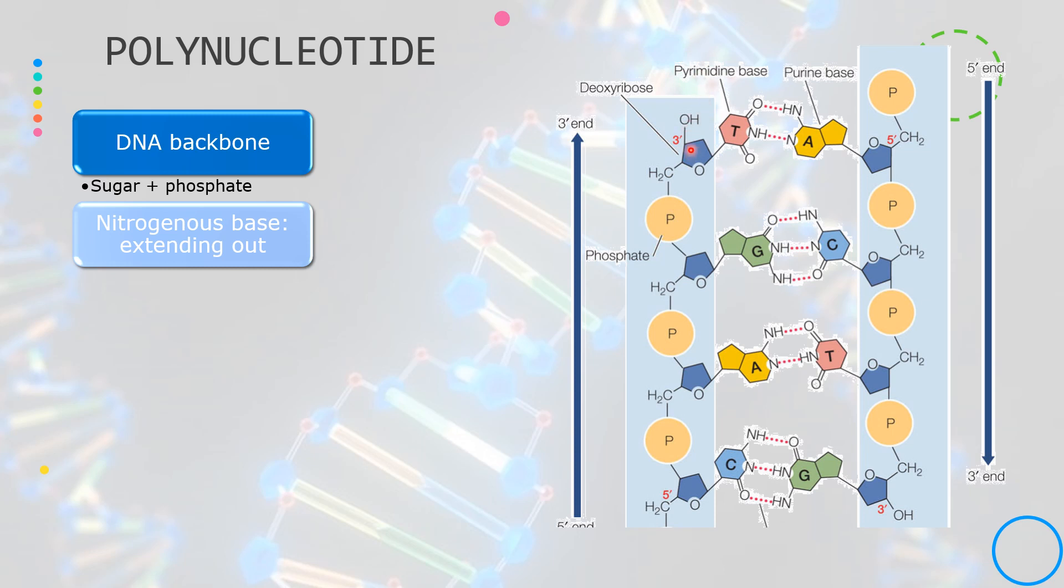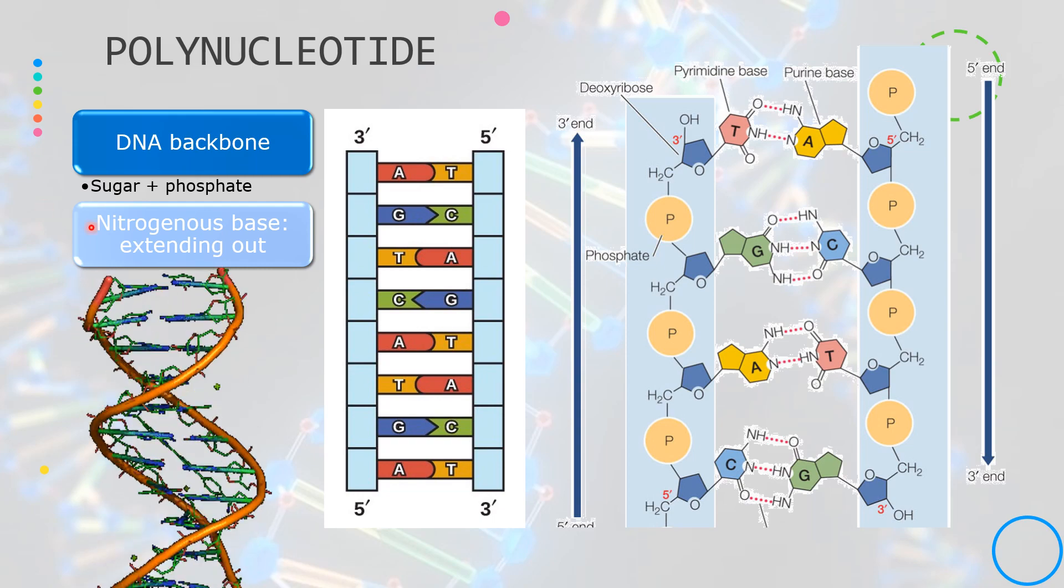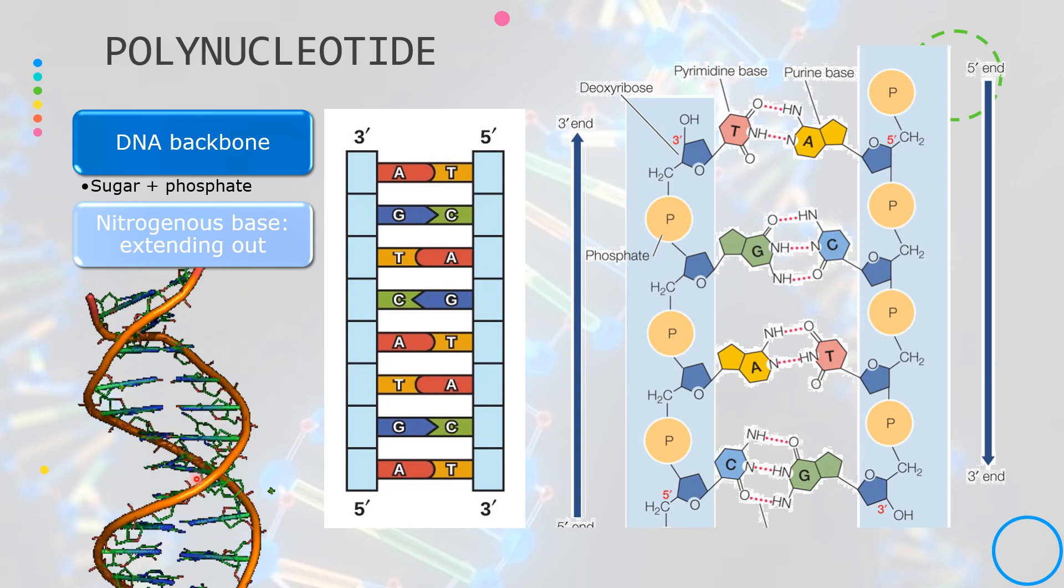The sugar is at the 3' end and the phosphate is at the 5' end. In double-stranded DNA, the molecular double helix shape is formed by two linear sugar phosphate backbones that run in opposite directions and they twist each other to form the helical shape.